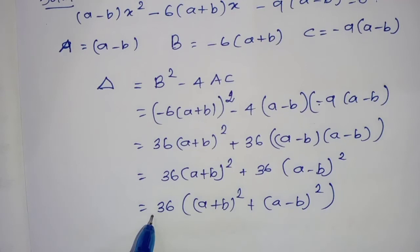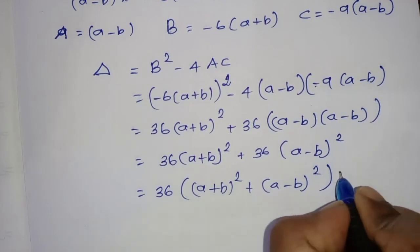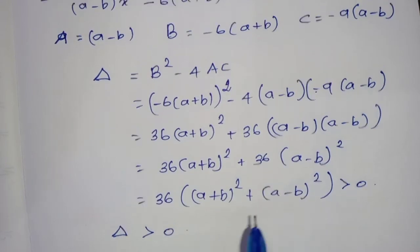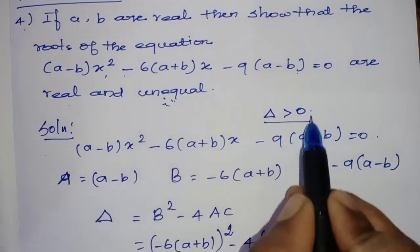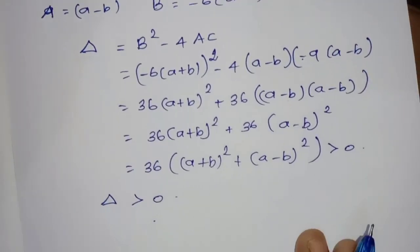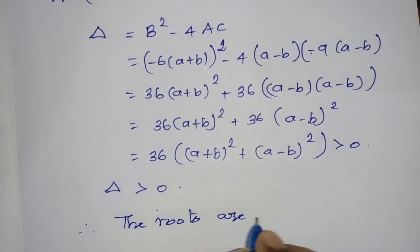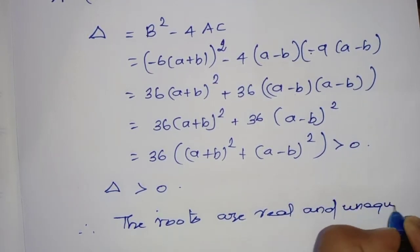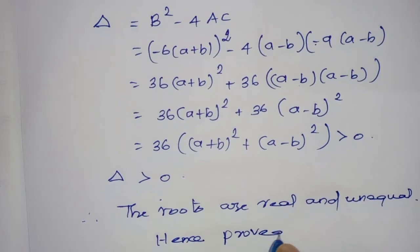So the delta value is positive, delta greater than 0. When delta is greater than 0, the roots are real and unequal. Therefore the roots are real and unequal. Hence proved.